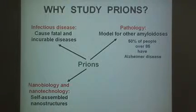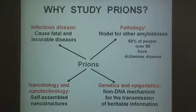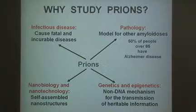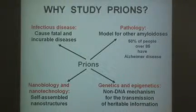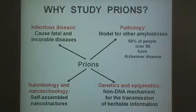Finally, from a geneticist's point of view — and my origin is from genetics — prions provide a new mechanism for transmission of information which is not coded in DNA sequence but is coded in the protein structure. In this way, they can contribute to genetic and epigenetic phenomena and to epigenetic inheritance.